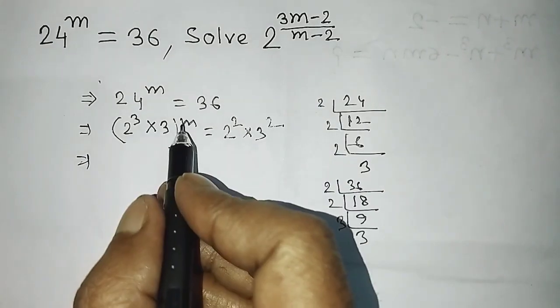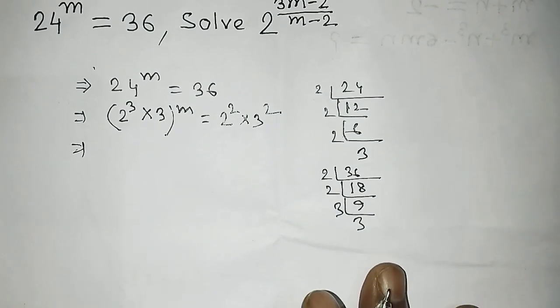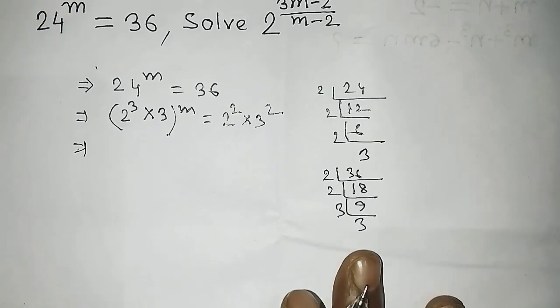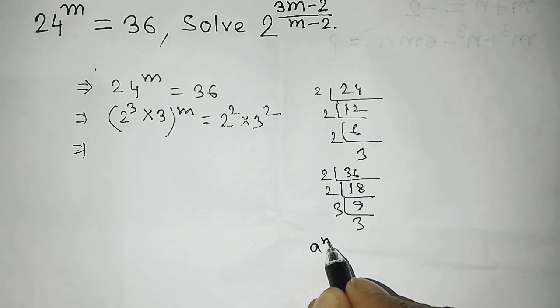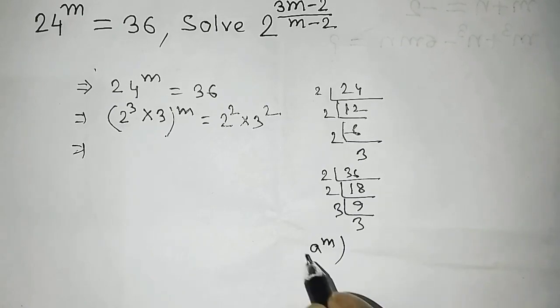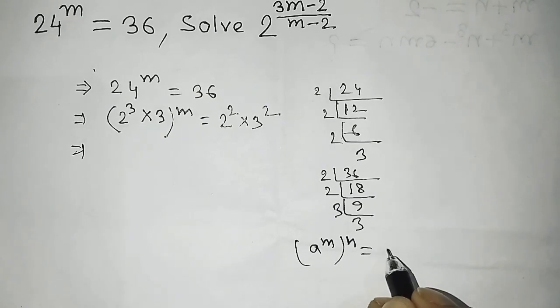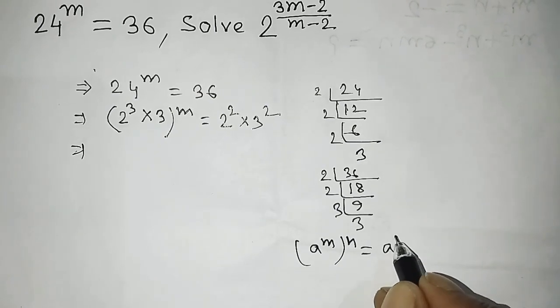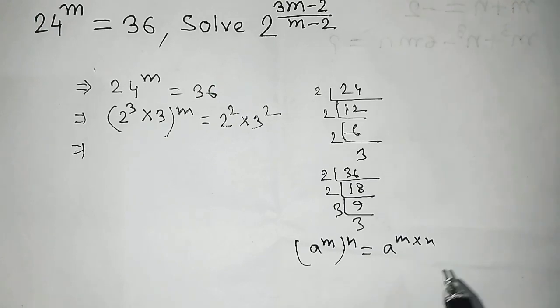After that, you need to multiply the powers. The formula to apply here is: a to the power m, whole to the power n, equals a to the power m into n.